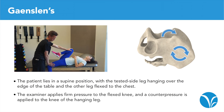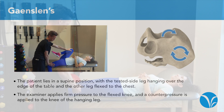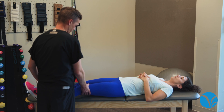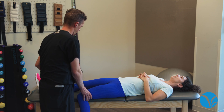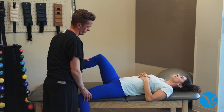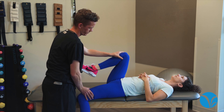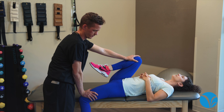For the Gaenslen's test, the patient lies in a supine position with the tested side leg hanging over the edge of the table and the other leg flexed to the chest. The examiner applies firm pressure to the flexed knee and counter pressure is applied to the knee of the hanging leg. The procedure is then repeated on the opposite side. The test is considered positive if the patient feels pain in the hanging leg side.